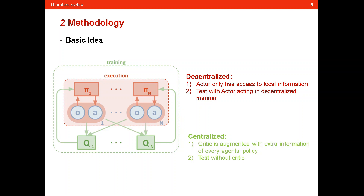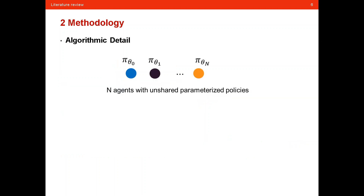The overall procedure of this methodology can be characterized by two features. The first is decentralized execution: the actor only has access to local information and interacts with the environment separately. The second is centralized training: the critic is augmented with extra information from every agent's policy, giving it an overall view of the system. During the test procedure, the critic is not used.